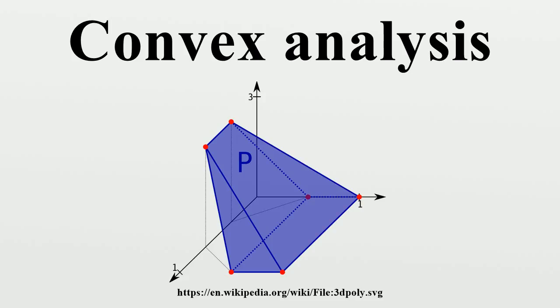Convex conjugate: The convex conjugate of an extended real-valued function f: X→R∪{±∞} is f*: X*→R∪{±∞}, where X* is the dual space of X.